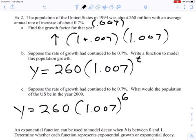And the time would be the time from the year 1994 to 2000, so that would be 6 years. And then I punch this in my calculator. I've got 1.007 to the sixth power, and then that times 260, and I get it equals 271.1 million.